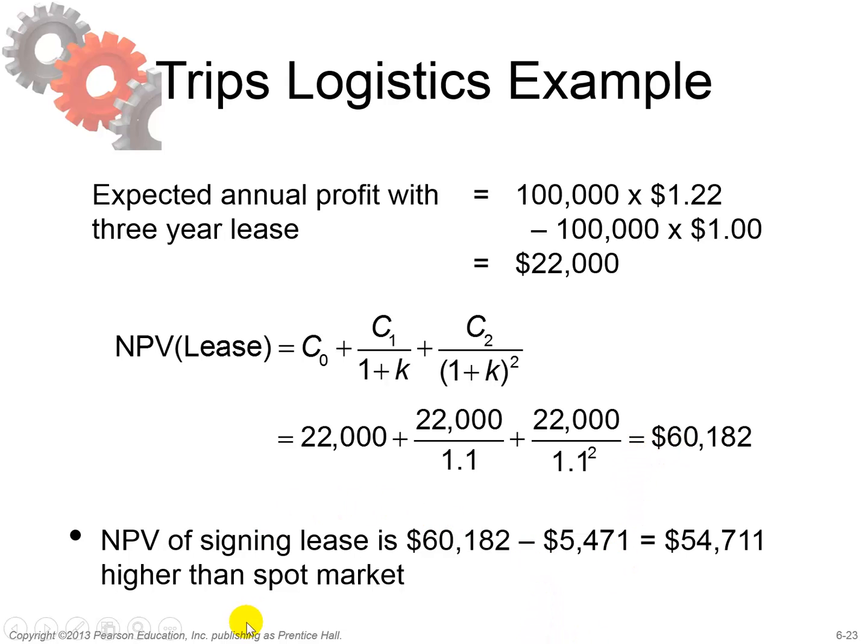Comparing: the spot market net present value was 5,471 dollars, while the net present value of signing a three-year lease is far better at 60,182 dollars. Therefore, in this case we choose the three-year lease option.